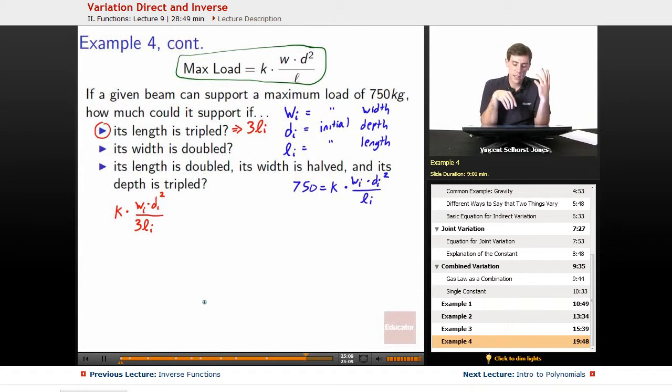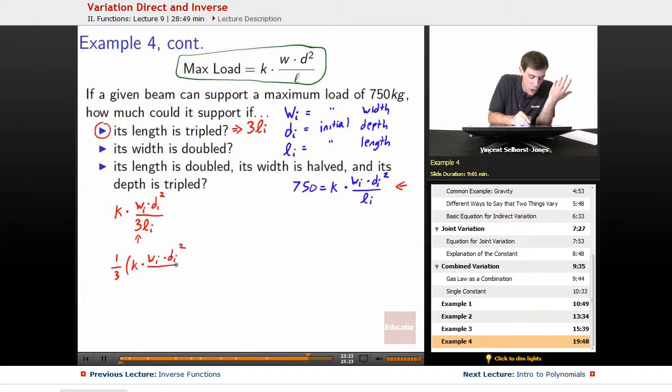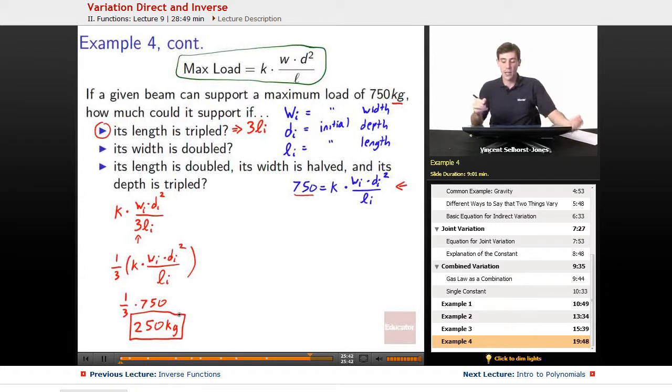Well, we don't know what that is, but, oh, hey, that looks a lot like this. Oh, that's just a third. We can pull that third out. We've got one third times quantity K times WI times DI squared over LI. We already know what this is. That's just 750, so it's one third times 750. One third times 750 is 250. What's the unit we're working with? We're working with kilograms as our unit, so the maximum load, if we were to triple the length of this beam, would be 250 kilograms.